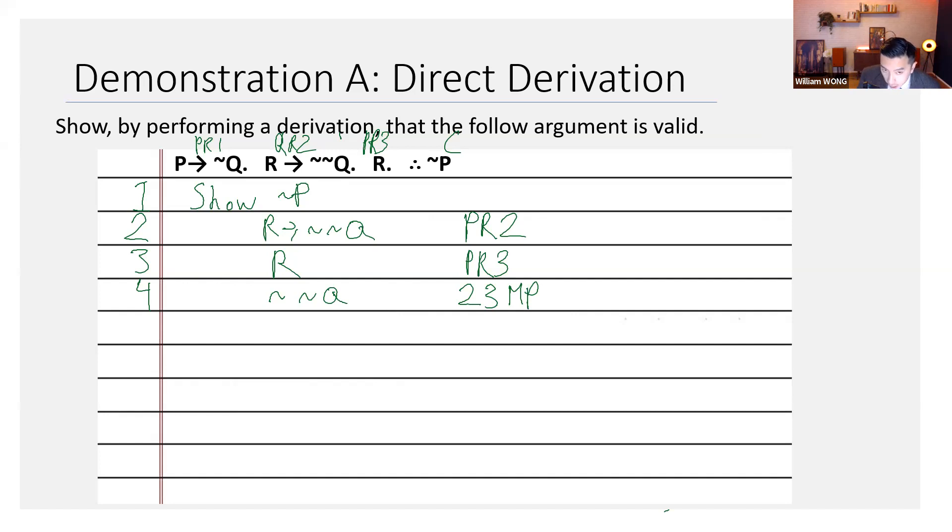And I hope you can now see that we haven't used premise one yet. But premise one is going to be really handy for us next. Let's look at premise one, and let's pull it down. P entails not Q. That's premise one.